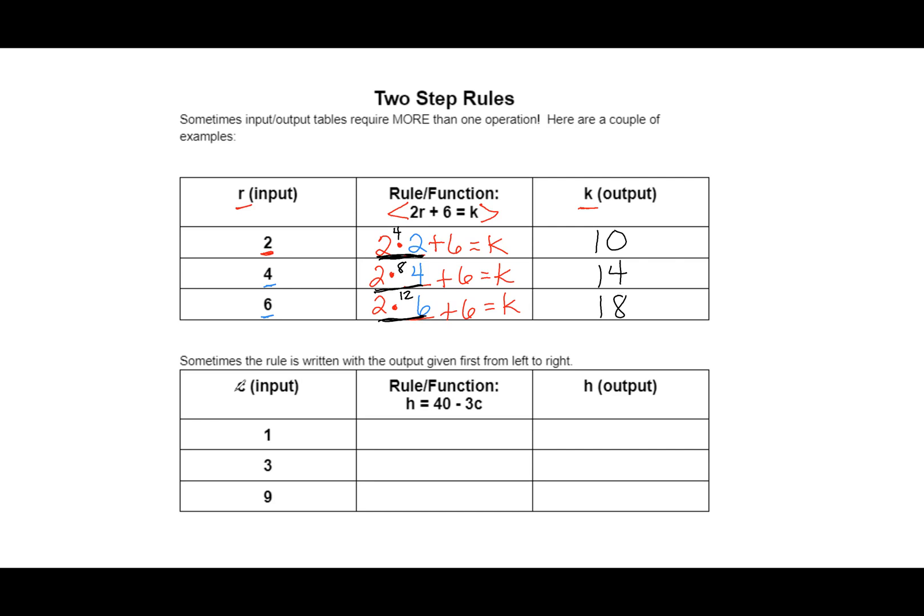The next one actually gives you C, the input, and H as the output. But it writes it kind of backwards. It gives you the H first. So sometimes your rule is written with the output given first, from left to right. But it doesn't change anything about how we're going to do this problem. For the first one, we're just going to rewrite it exactly how it looks. H equals 40 minus 3. And we know no sign by means you multiply here. That 3C means 3 times whatever C is. And we'll go back and put it in in a second.